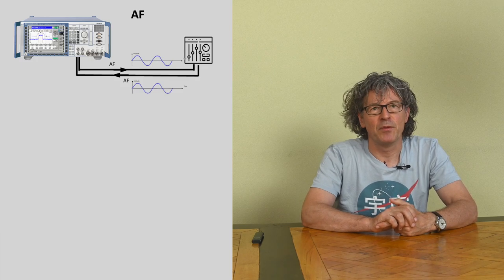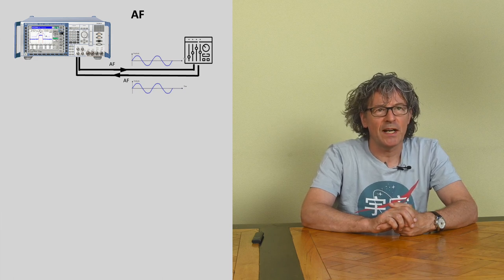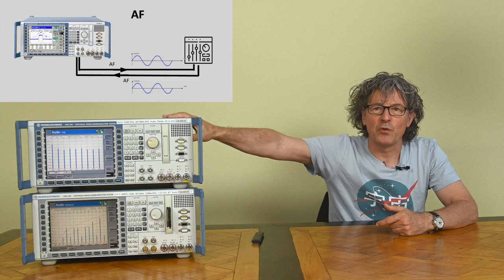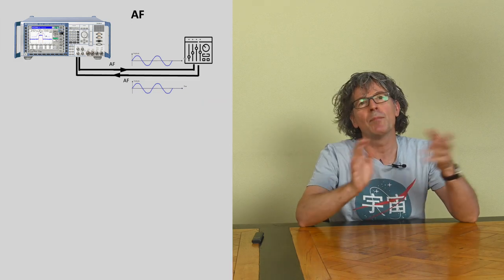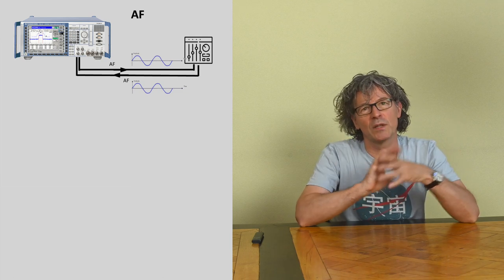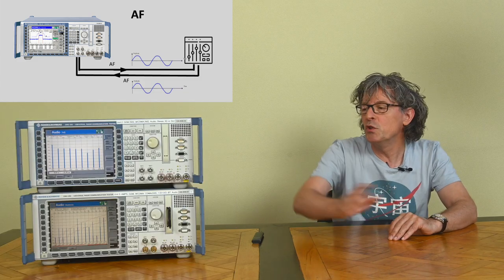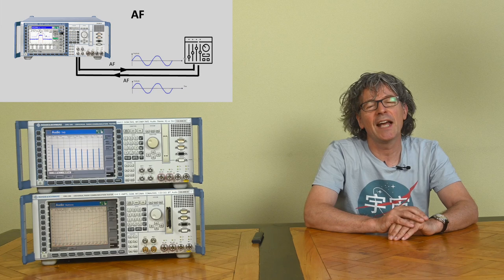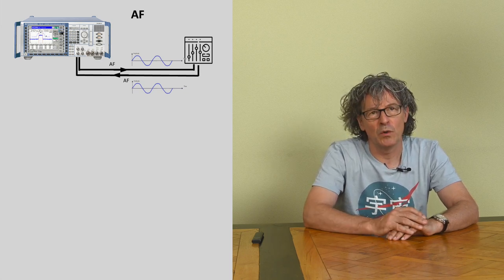In order to do so, I first want to discuss three rather different measurement modes the device has. We'll start with the basic AF mode, or standalone mode. This is the simplest mode where the CMU sends out a test audio signal to a device under test — like an audio amplifier, mixer, or similar — and the audio signal returns to the CMU via the front connectors and is analyzed. Everything happens in the simple audio domain.